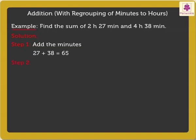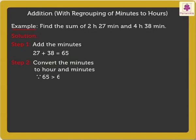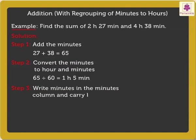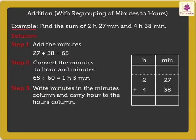Step 2: Convert the minutes to hour and minutes. As 65 is greater than 60, we divide 65 by 60, which is equal to 1 hour, 5 minutes. Step 3: Write minutes in the minutes column and carry hour to the hours column. Thus, we write 5 in the minutes column and carry 1 hour to the hours column.